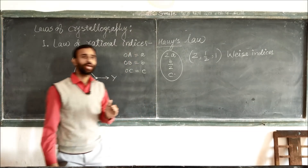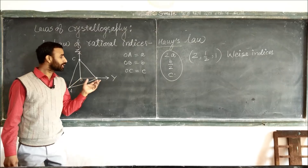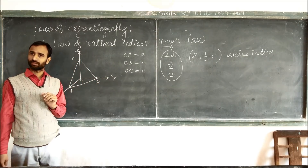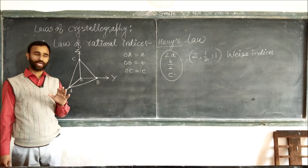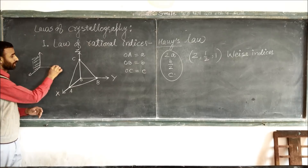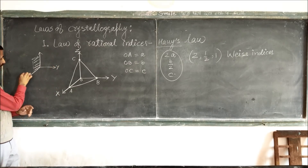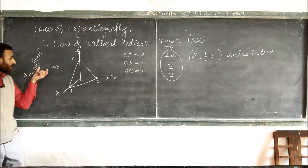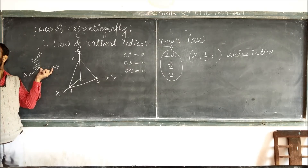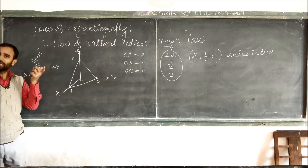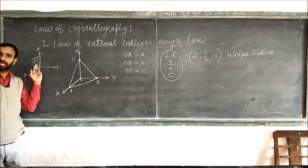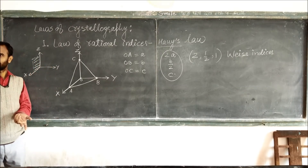But if we have a plane which cannot cut any one of the axes — like a plane which cannot cut the y-axis — then the intercept for that axis is taken as infinity. If it cannot cut the y-axis, that means for y, its intercept is taken as infinity.